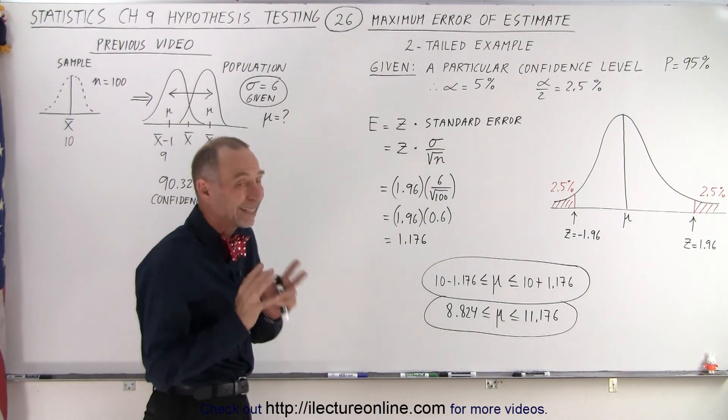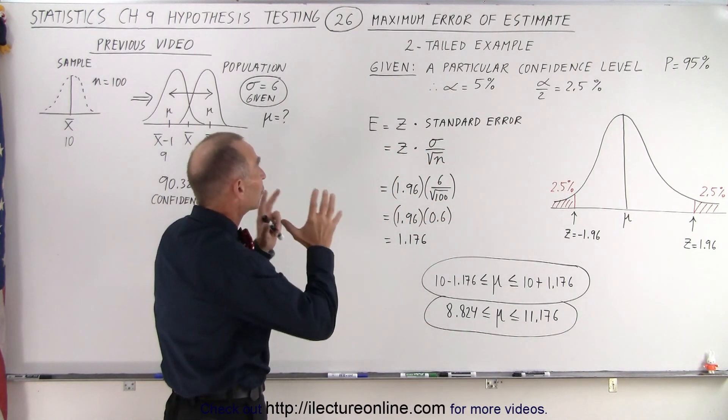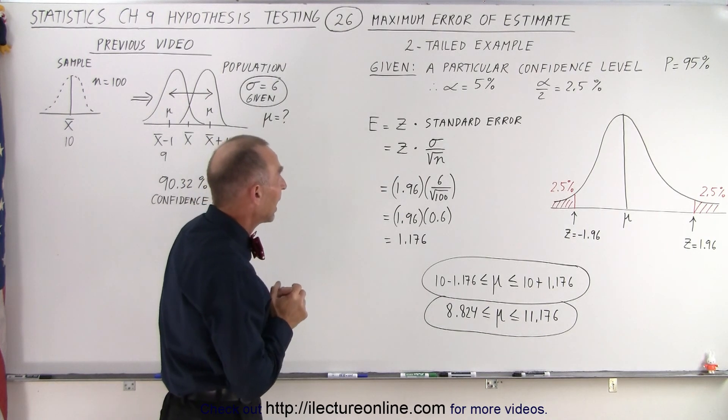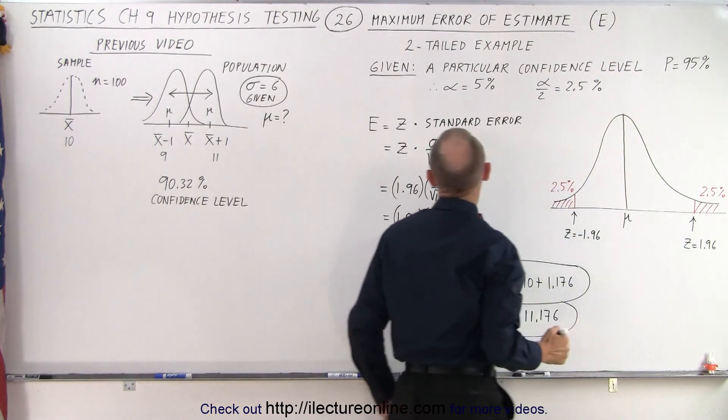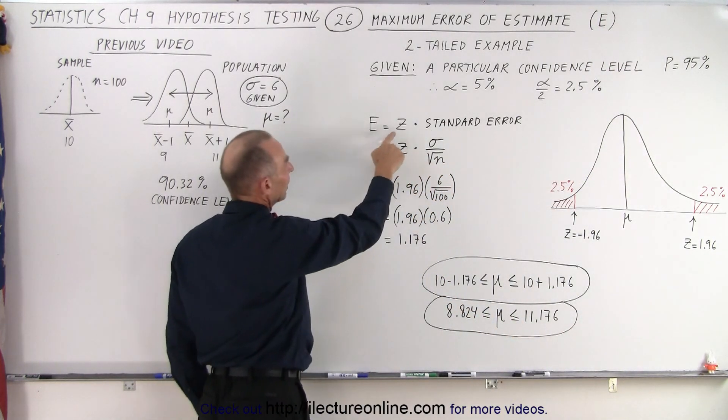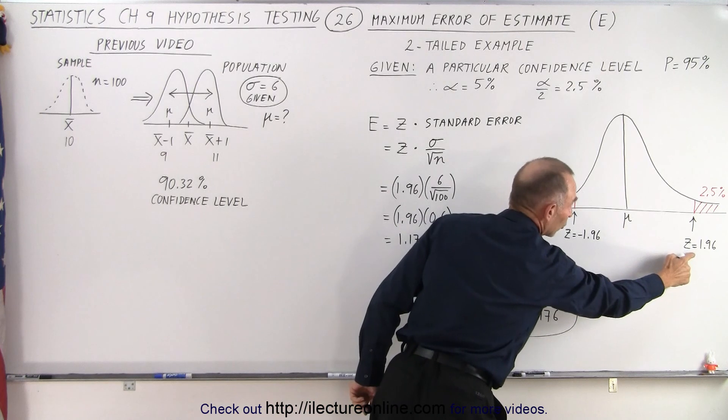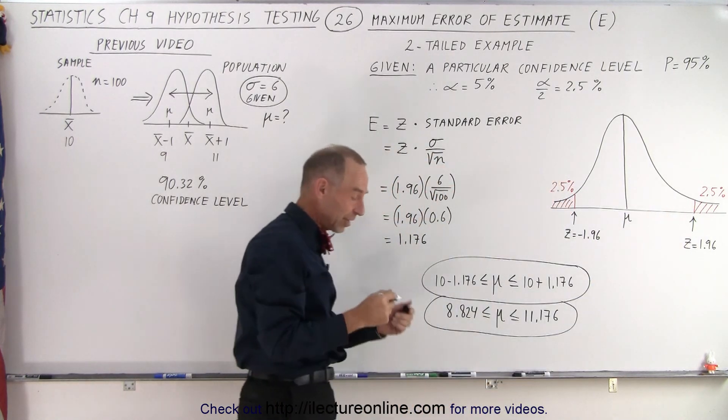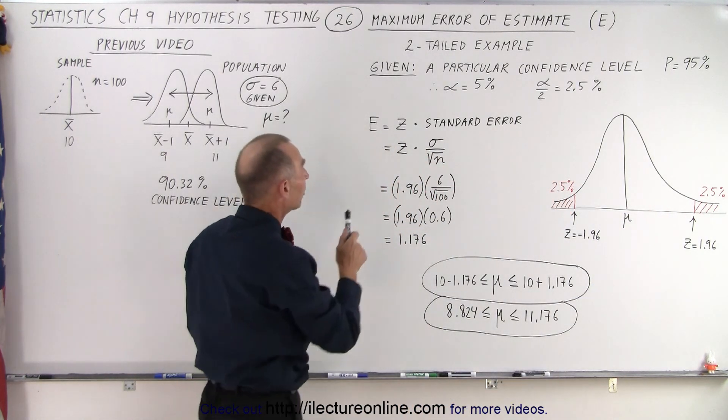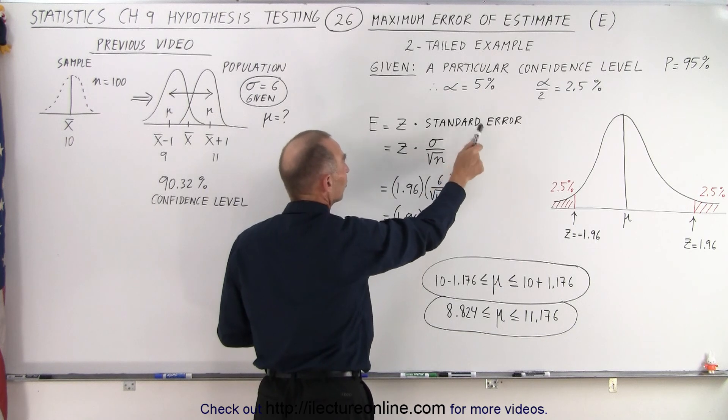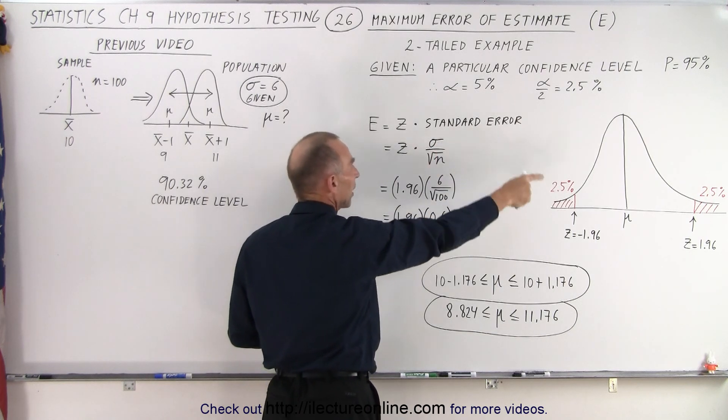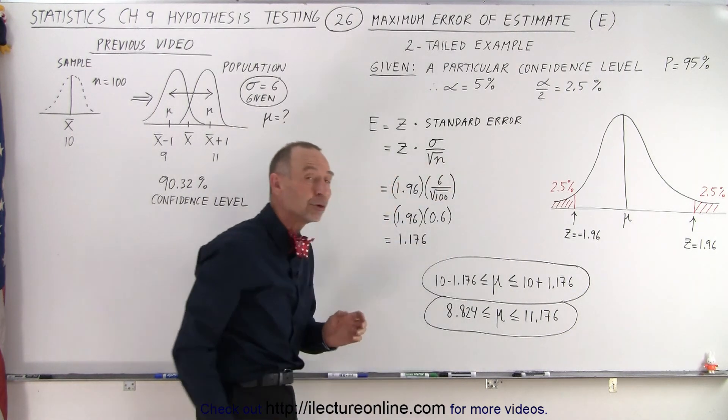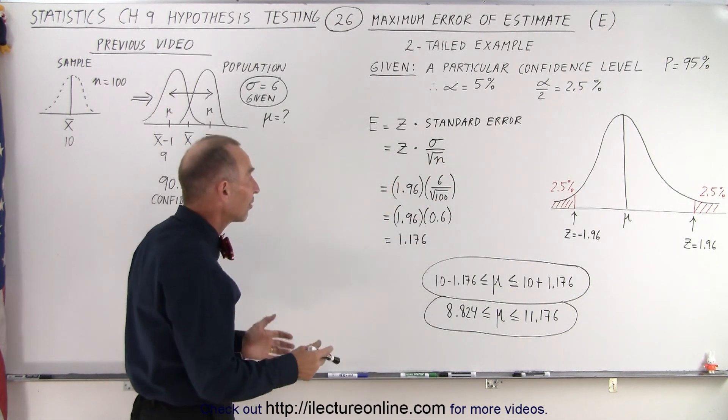So we now want to calculate what we call the maximum error of estimate, and we use the letter E for that. E can be calculated by taking the z-score, which we determine by setting the level of confidence, and then multiplying that times the standard error. Now the standard error, by definition, is the standard deviation of the population divided by the square root of the sample size.